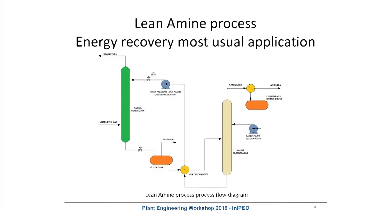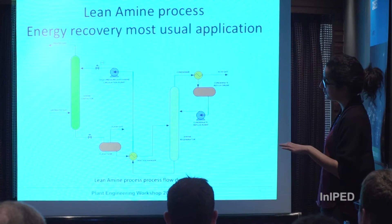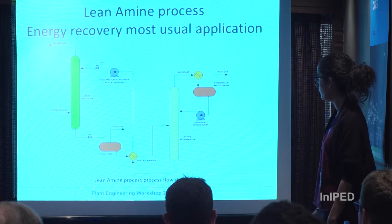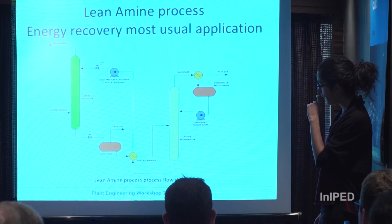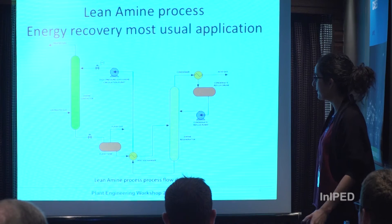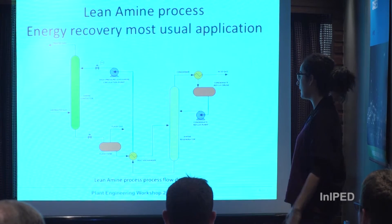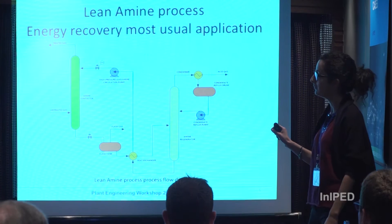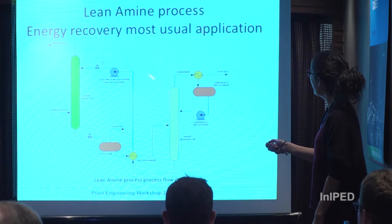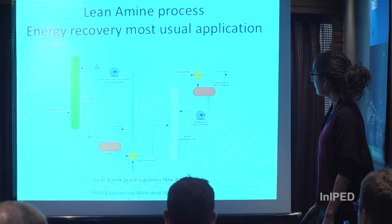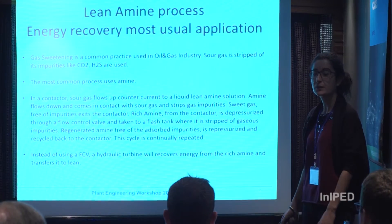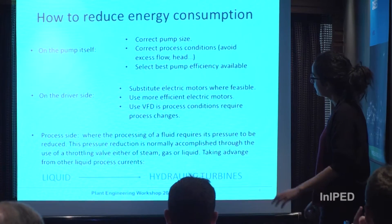The process we are going to use as a baseline to develop this energy recovery application is the amine process, which is a very well-known process. In this process, crude gas goes into the contactor, which operates at very high pressure. In the contactor, amine is used to remove H2S, CO2 and impurities from the gas. After the contactor it goes to a pressure reducing valve where the supposed energy saving is dissipated, and after that it goes to a flash tank where the gas and impurities are flushed and the amine goes to a heat exchanger, an amine recovery system, and then is sent back to the contactor.